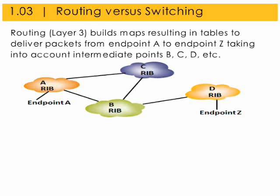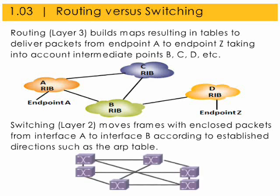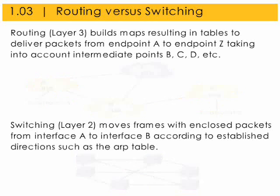The router determines an alternate path for some packets as multiple paths might be available. Path selection decisions are based on topology, policies, and metrics. The router repeats its packet forwarding until it is turned off. Switching is a Layer 2 protocol that moves frames with enclosed packets from interface A to interface B according to established directions such as the ARP table.